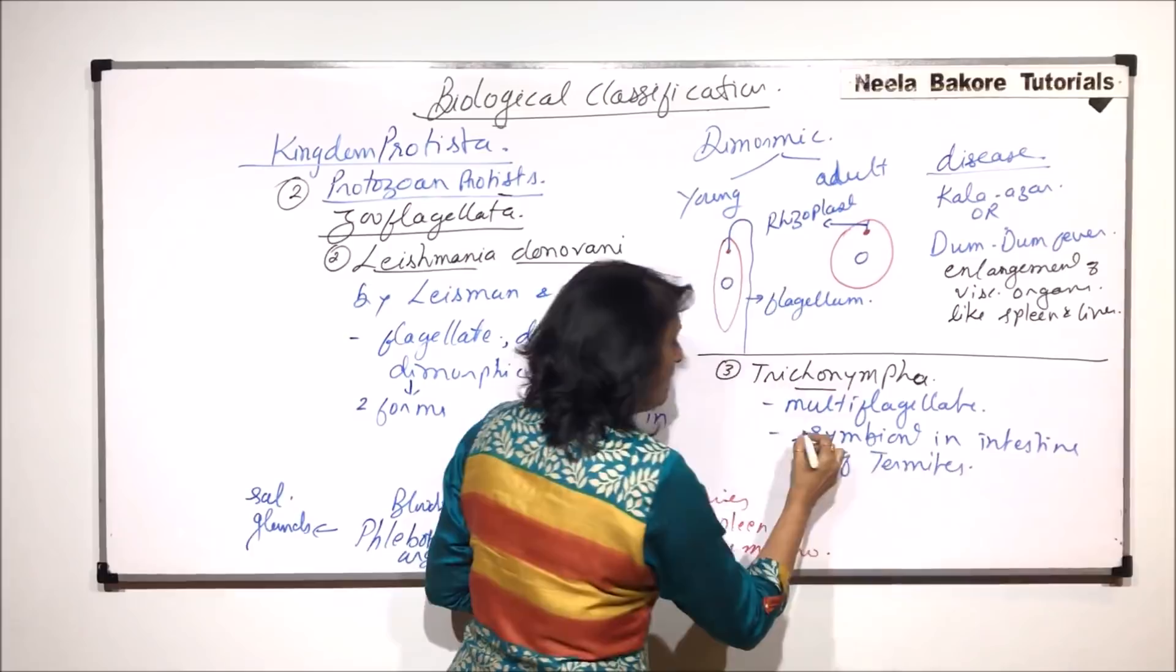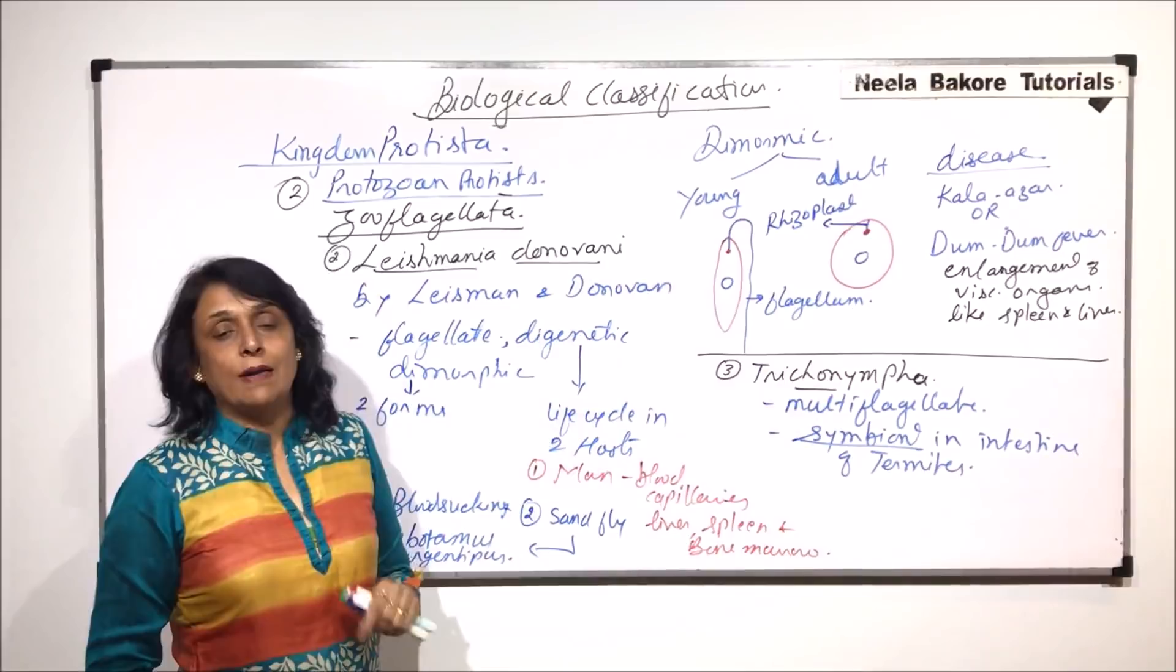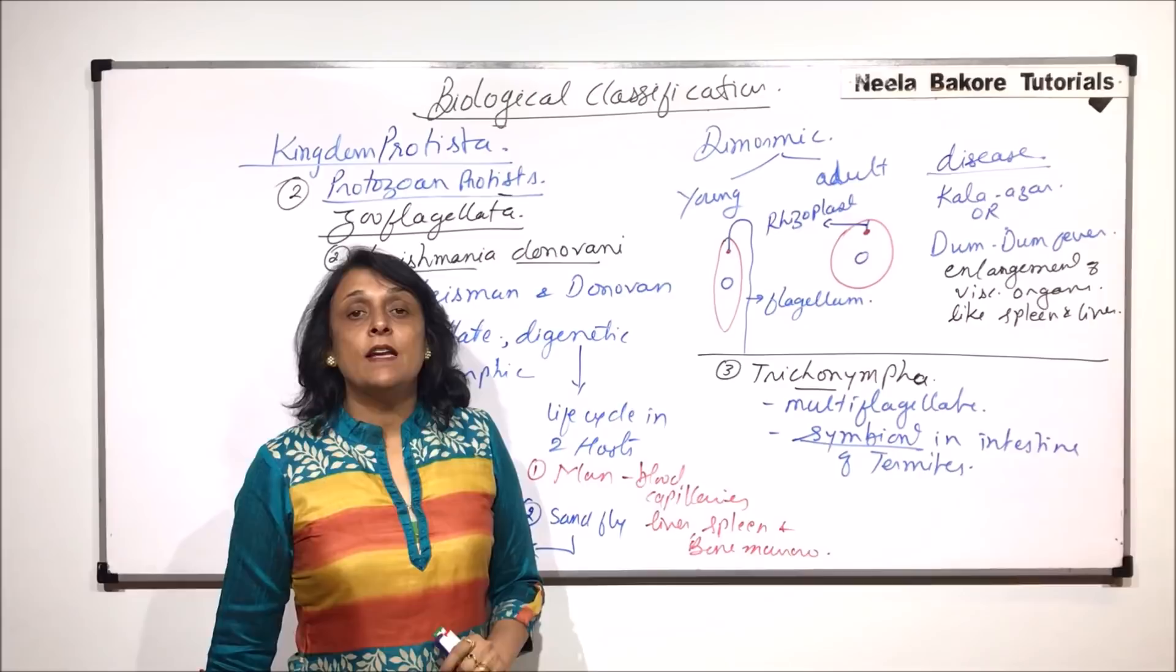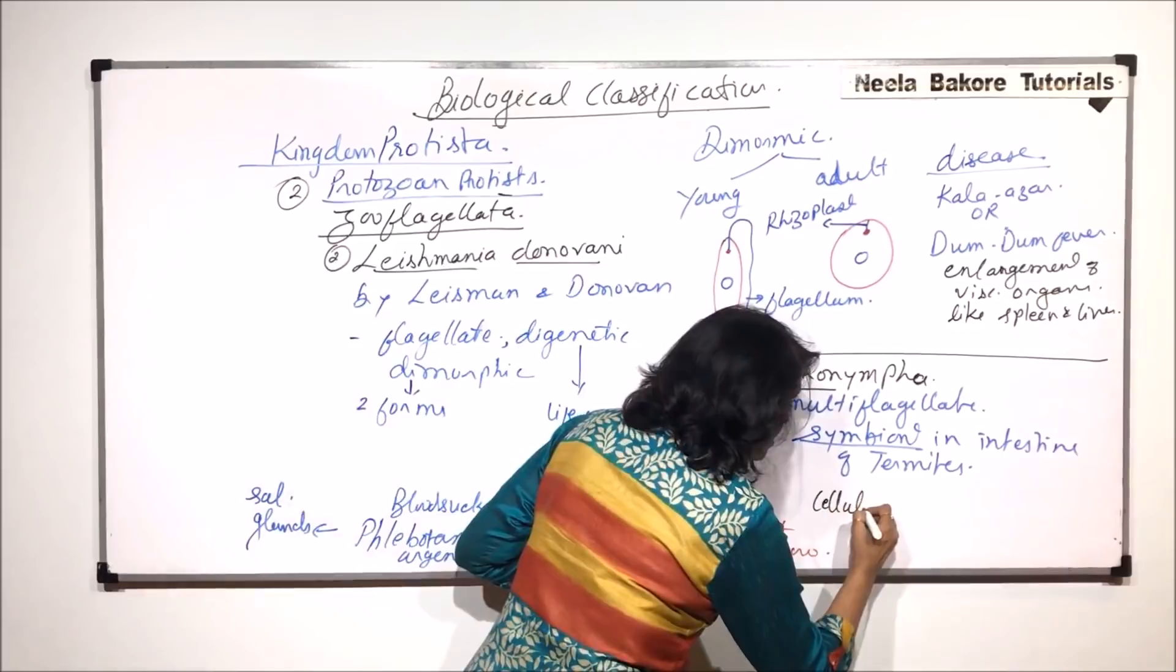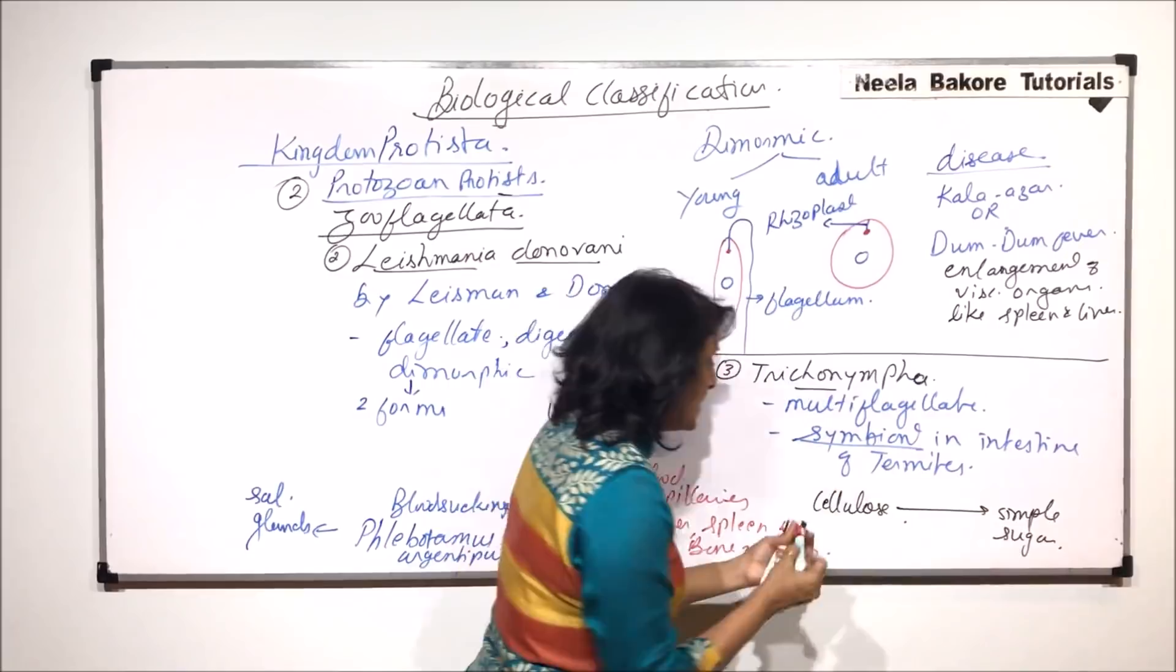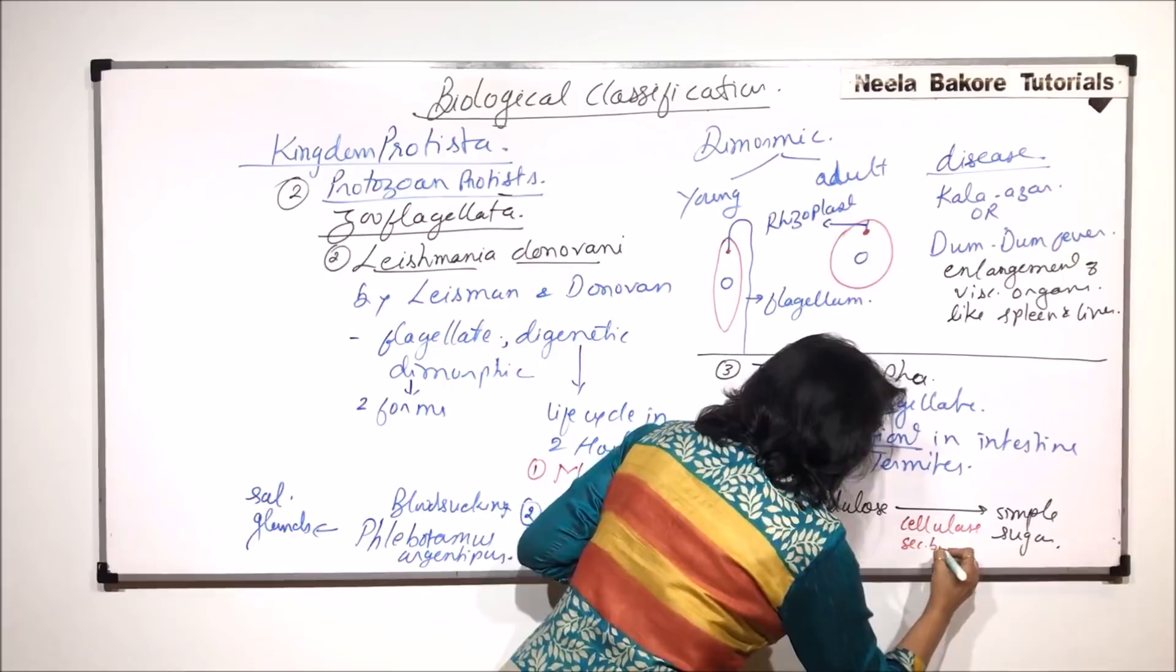Now when we use the word symbiont, that means there is a mutual benefit to both organisms. So there is an advantage which Trichonympha gets and an advantage which the termite would get. Termites feed on wood, which is cellulose. This cellulose is digested into simple sugars with the help of an enzyme called cellulase, and this cellulase is secreted by Trichonympha.